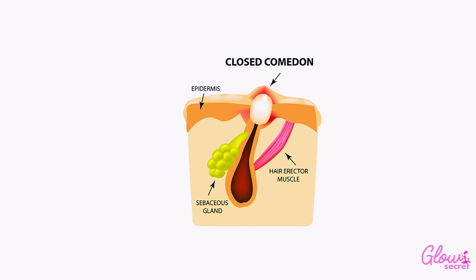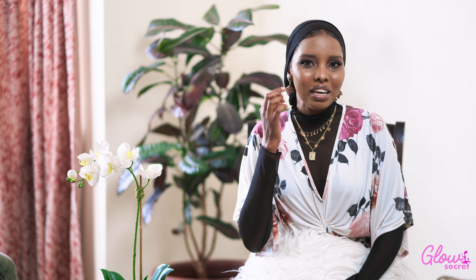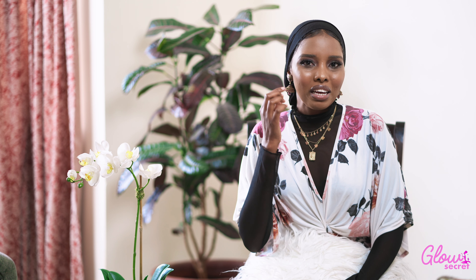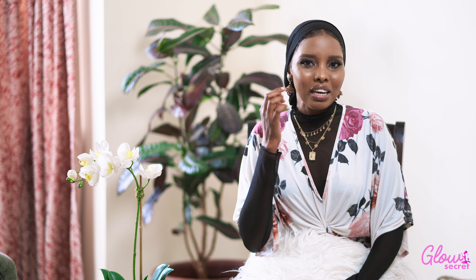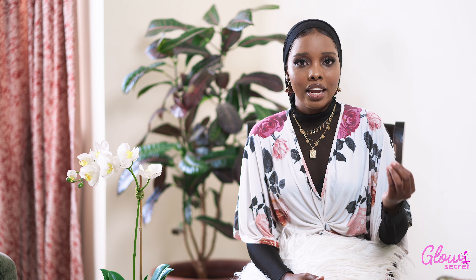So how does acne occur? To keep your hair and body lubricated, your body depends on sebaceous glands which sit under your skin. They secrete an oily substance called sebum, which prevents your skin and hair from drying out. Your hair follicles routinely shed dead skin cells, which the sebum normally carries out of your body. When your body produces extra sebum and dead skin cells, they can stick together, clog your pores, and that results in acne.